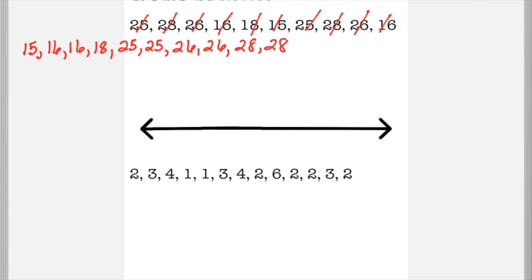An easier way to do the median is actually count how many numbers you have and find the number that's in the middle. So we have one, two, three, four, five, six, seven, eight, nine, 10 numbers. And halfway in between would be five.